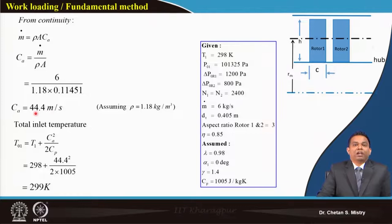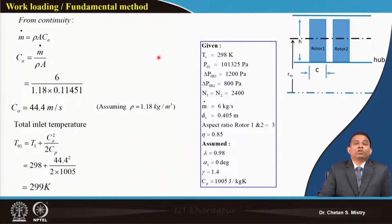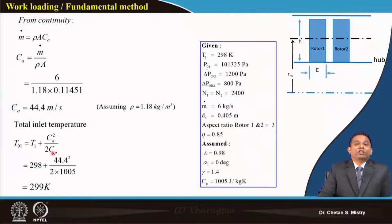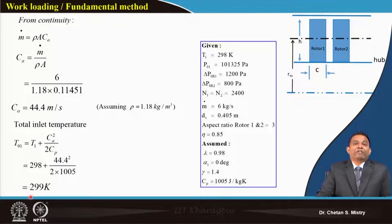Be careful about total versus static properties. The thermometer gives atmospheric (static) temperature as 298 K. Since the entry flow is axial, C_1 = C_A, and total temperature is T_01 = T_1 + C_A² / (2C_p), giving T_01 = 299 K. We now know axial velocity and temperature.